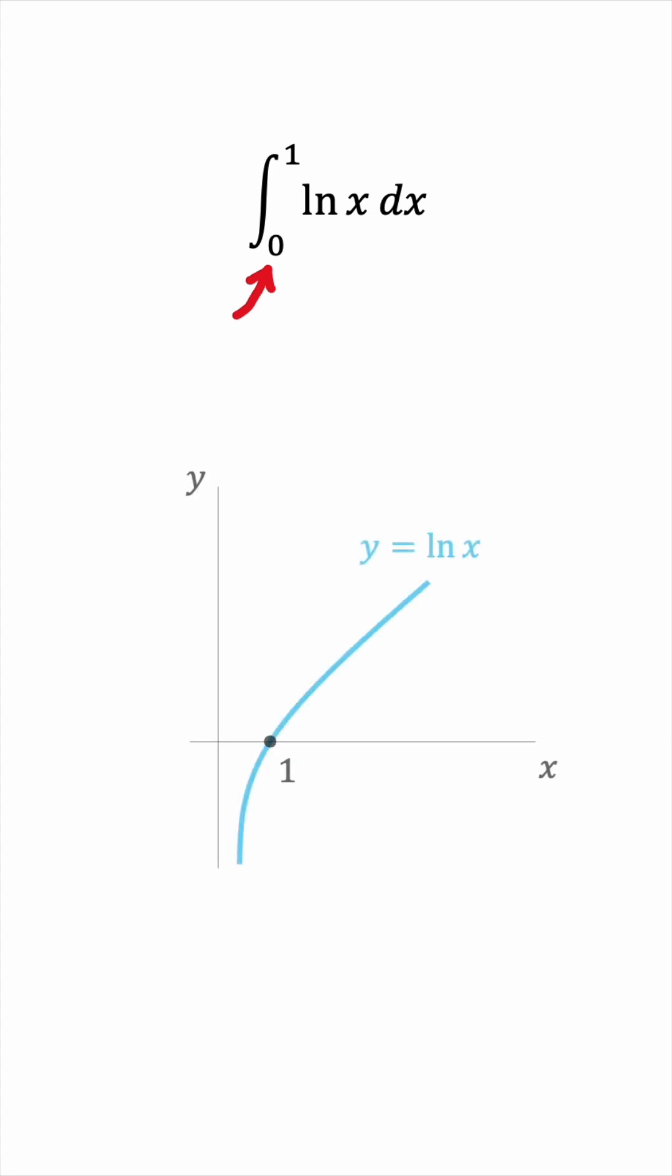If we look at the graph of the natural log, we can see that the y-axis is an asymptote. The area we're trying to find is this area shaded in red.